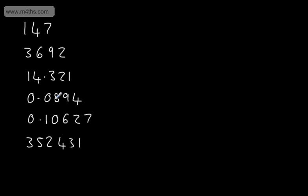So if I wanted to round this to one significant figure, we would be rounding to the nearest hundredth. If I wanted to round to two significant figures, I'd be rounding to the nearest thousandth. With 0.10627, the leading zero is not significant.